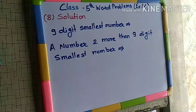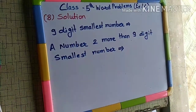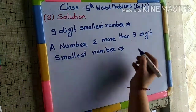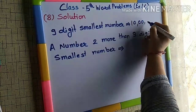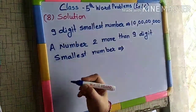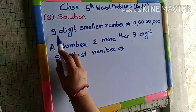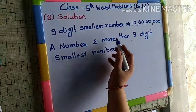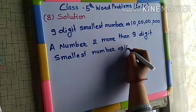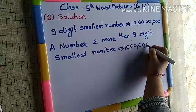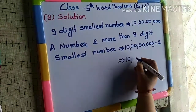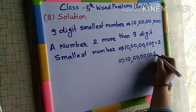Now, what is 2 more than the smallest 9-digit number? We have to find the smallest 9-digit number and then add 2 to it. The smallest 9-digit number is 1 followed by 8 zeros, which equals 10 crores. So 2 more than the smallest 9-digit number is 10 crores plus 2, which gives us 10,00,00,002. This is the answer.